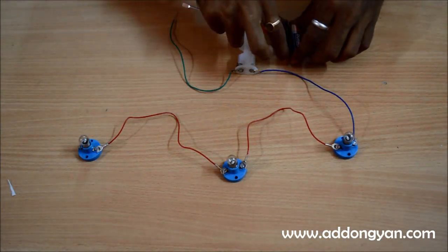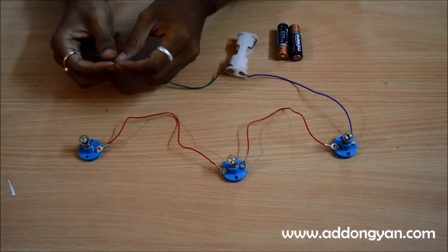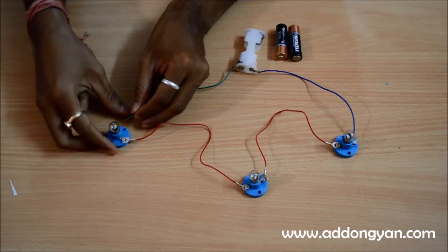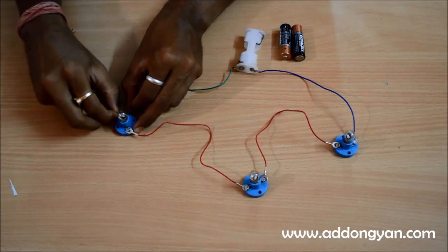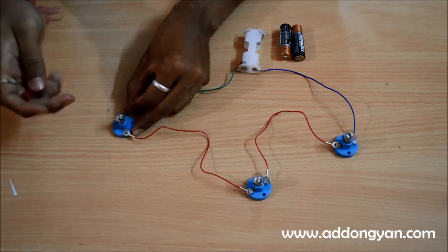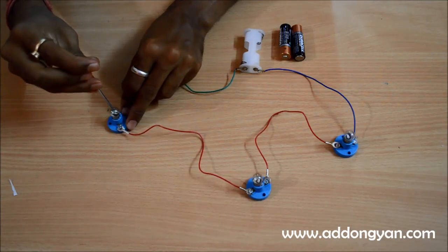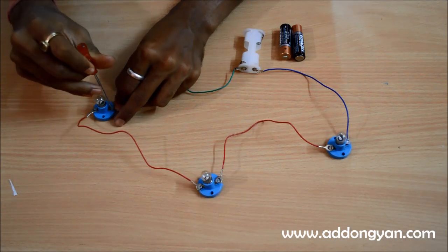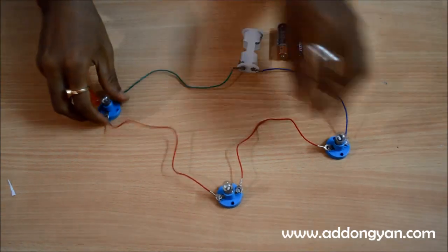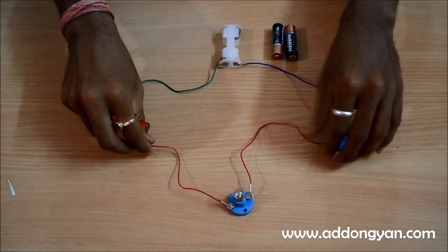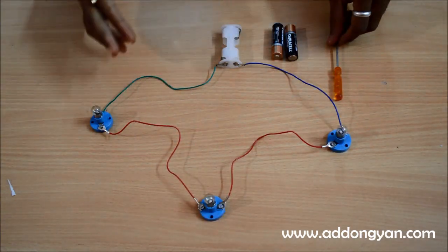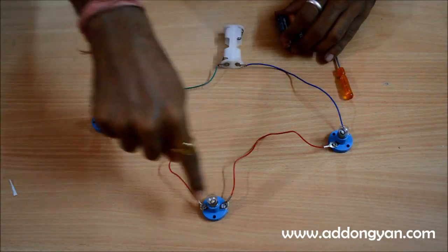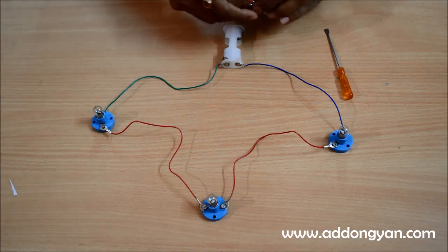In order for us to complete the loop we have to connect the negative end of the battery holder to the last remaining screw of the third bulb holder. So I am going to quickly fix it here. This basically completes my circuit and as we have seen in the first video on electricity which is how to make a simple circuit, my circuit is complete because it is in a complete loop and there are no gaps left.